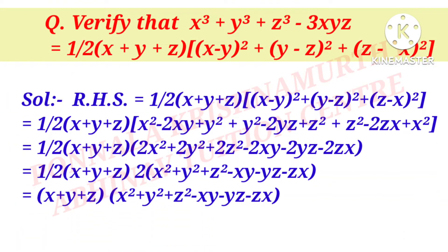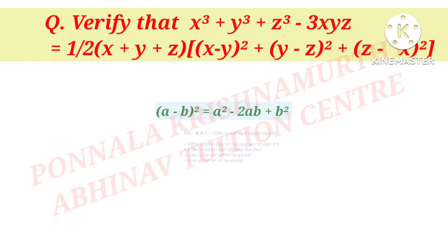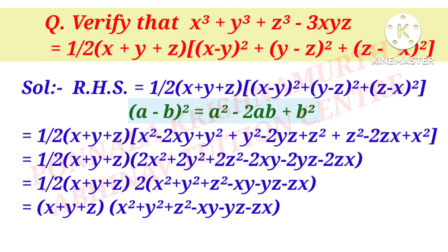Solution: RHS is equal to 1/2 into (x + y + z) into [(x − y)² + (y − z)² + (z − x)²]. That is equal to 1/2 into (x + y + z) into — (x − y)² is in the form of (a − b)² which equals a² − 2ab + b².